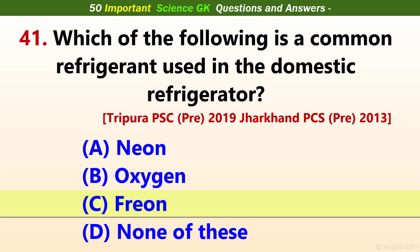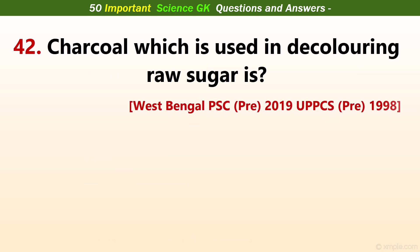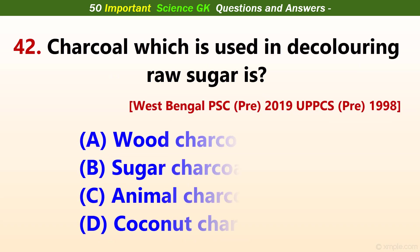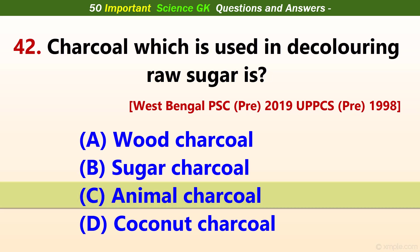Charcoal which is used in decoloring raw sugar is? Answer C: Animal charcoal.